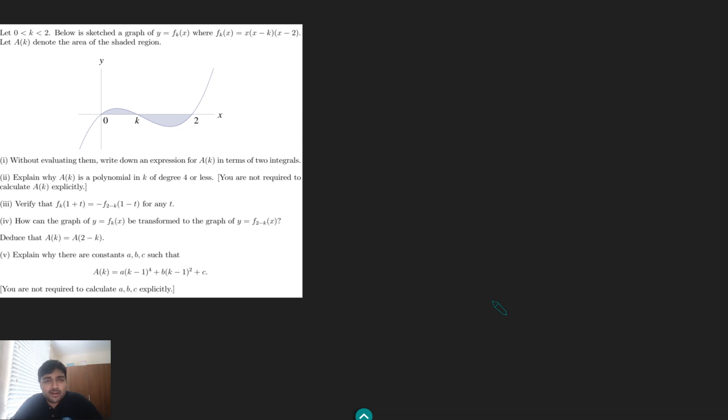It's got quite a few parts so I'm just going to tackle each part as they come. So we've got k between zero and two and we've got a sketch of the graph y equals fk(x) where fk(x) equals x times (x-k) times (x-2). We've got ak denoting the area of the shaded region, so this area here. Part one, without evaluating them, write down an expression for ak in terms of two integrals.